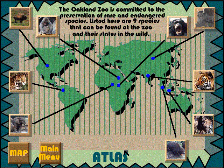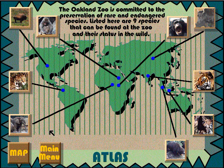Notice that this screen has a Map button and a Main Menu button at the bottom left side of the screen, which can be activated any time by simply clicking on it. Also notice there are nine animal buttons. Let's try clicking the Elephant button first and see what happens.